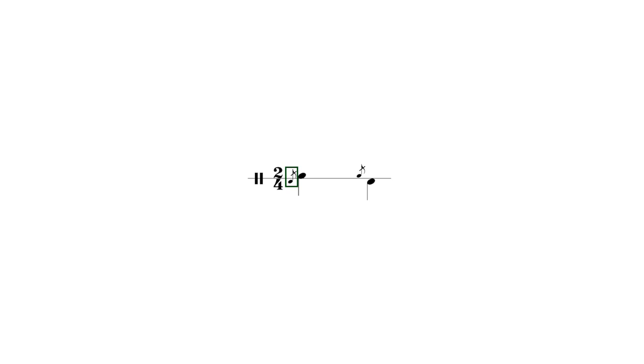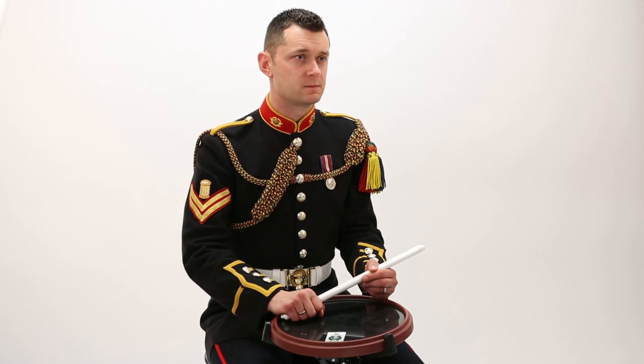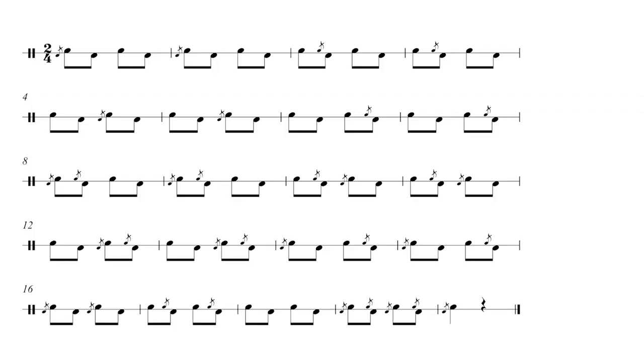Flams are written like this. You'll notice we've got an object note and then a smaller grace note preceding it. It's important to note that the grace note is written above or below the line to indicate which stick to play it on. Here's an exercise to practice — this grid is similar to the accent grid we played in a previous lesson but the flam moves around instead of the accent.